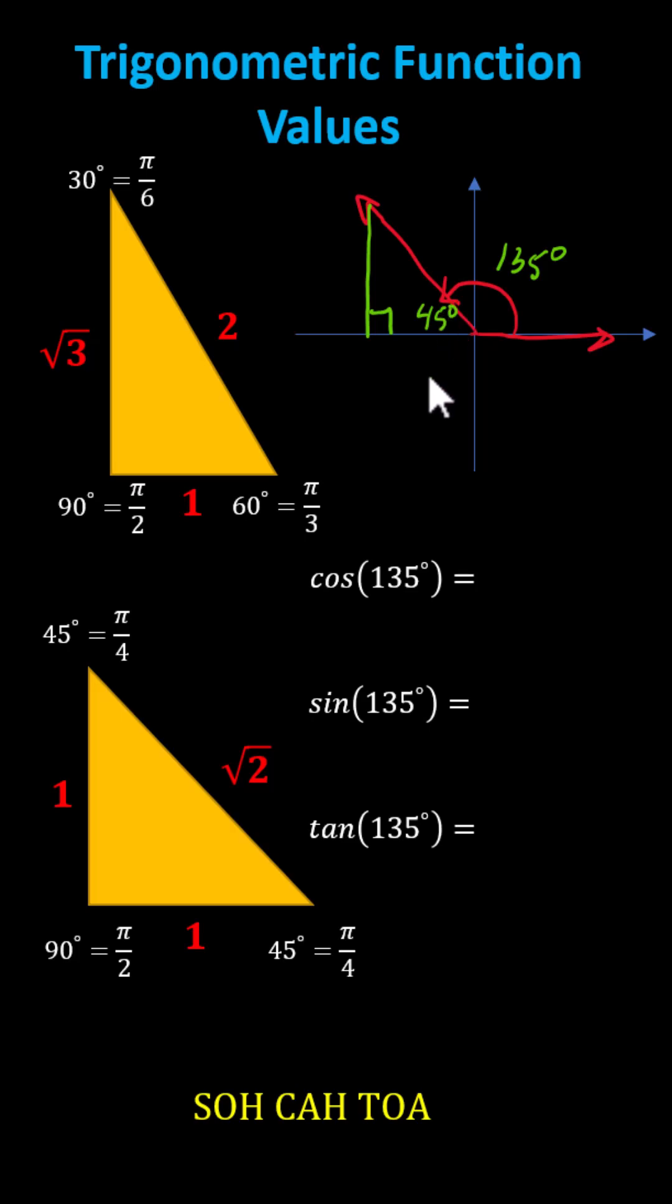The reference triangle is a 45-45-90 reference triangle, which indicates looking on the left, we can label the two legs with length of one and the hypotenuse square root two.